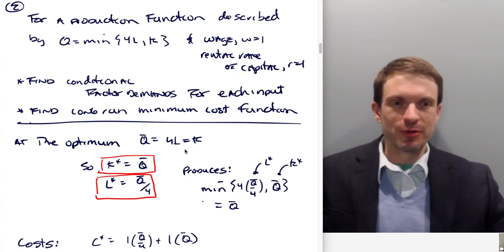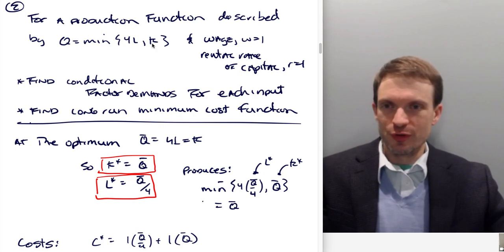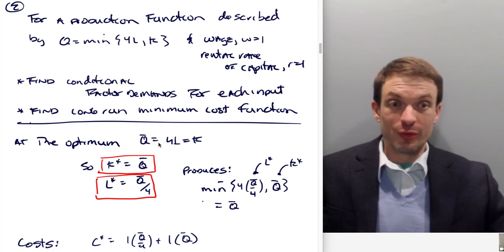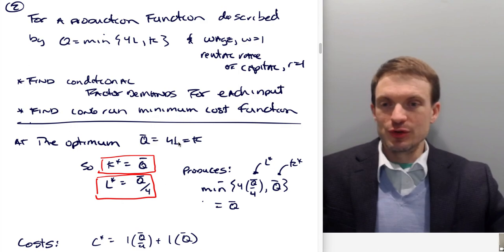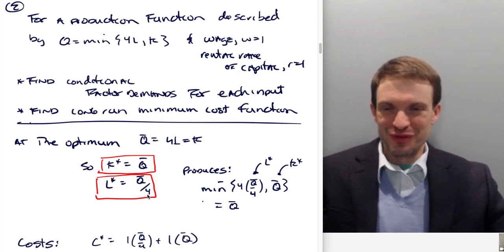Okay, well, we know at the optimum, it's got to be the case that q is equal to 4L is equal to K. So setting these equal, right, replacing the comma with an equal sign. Why? Because otherwise there's waste. We're going to have q is equal to 4L or L is equal to q over 4 and q is equal to K.